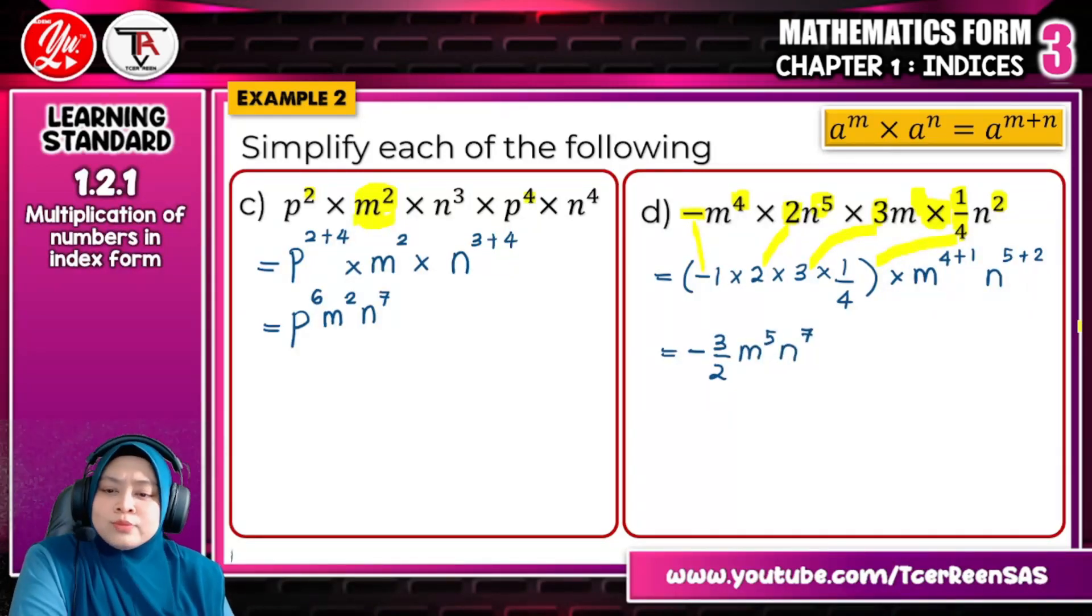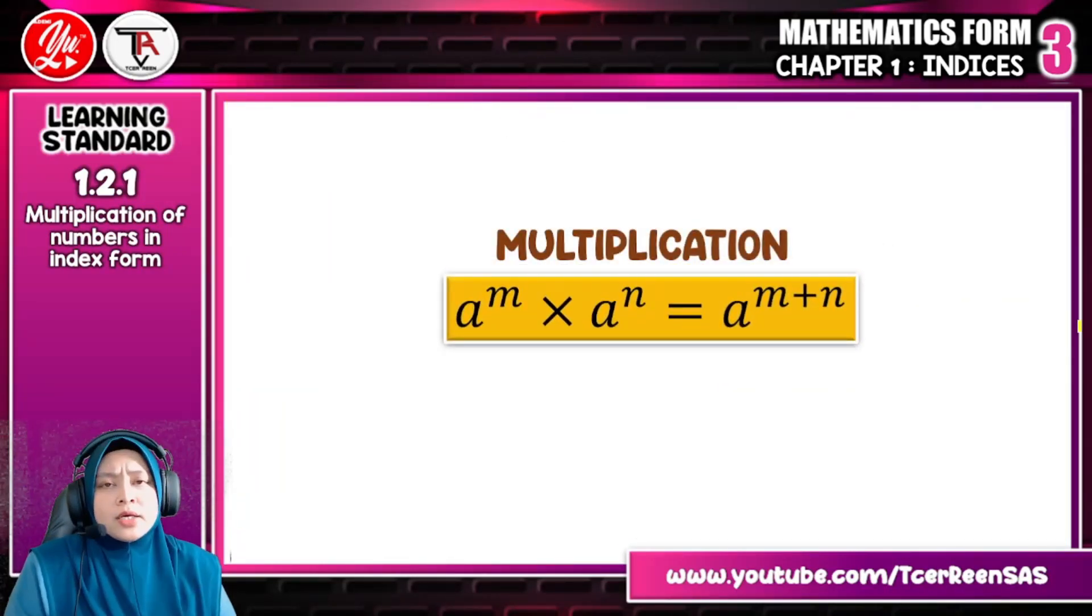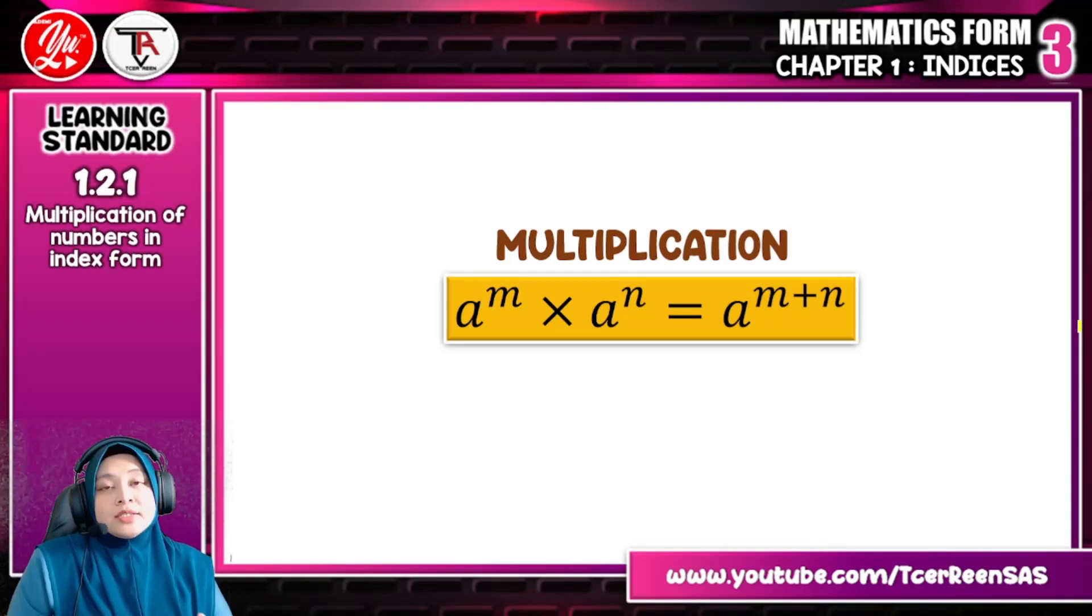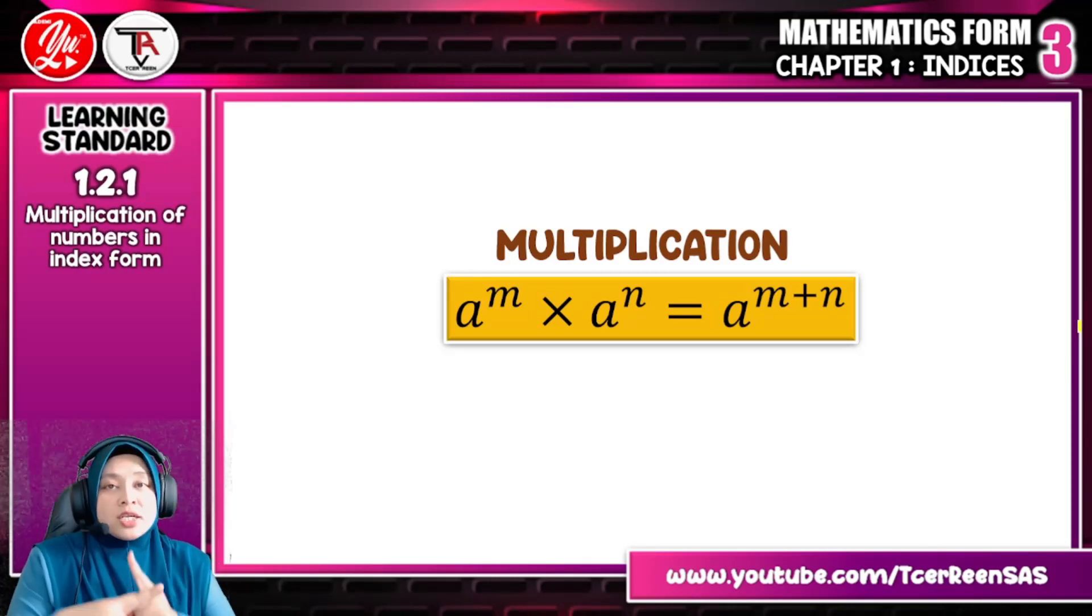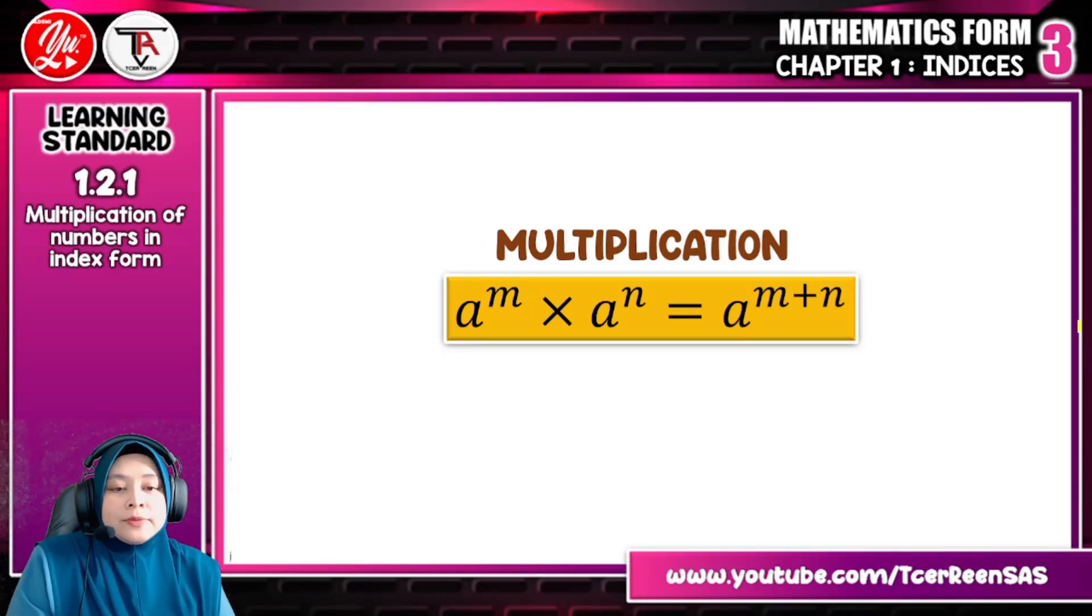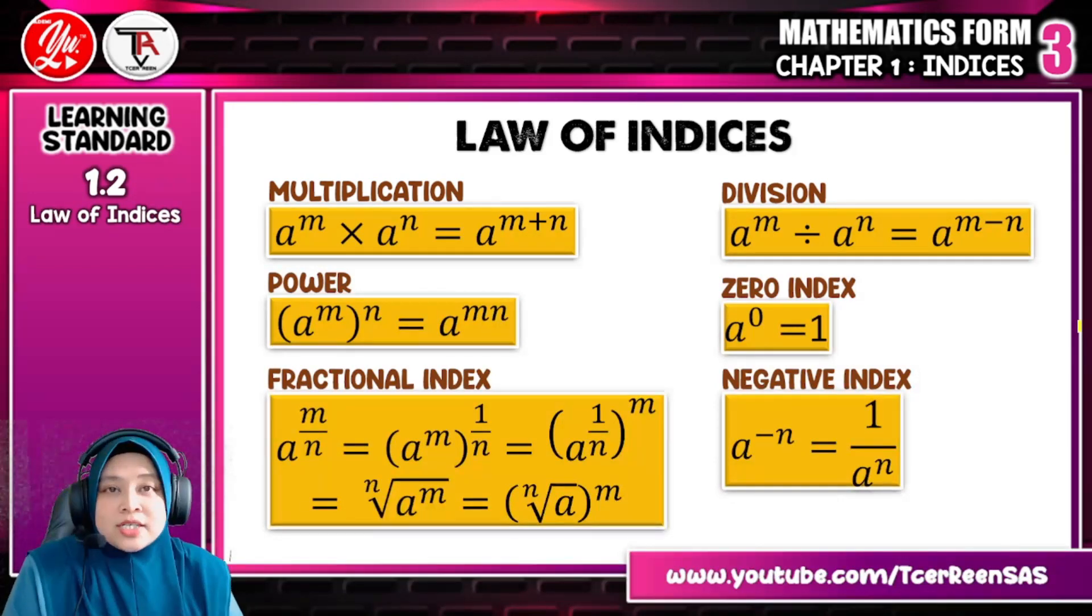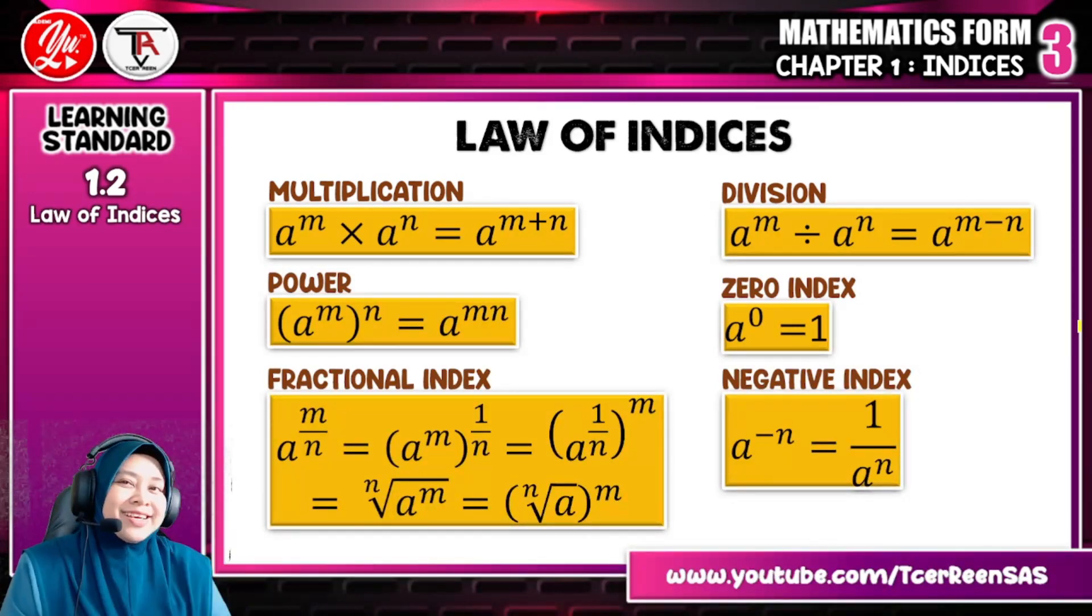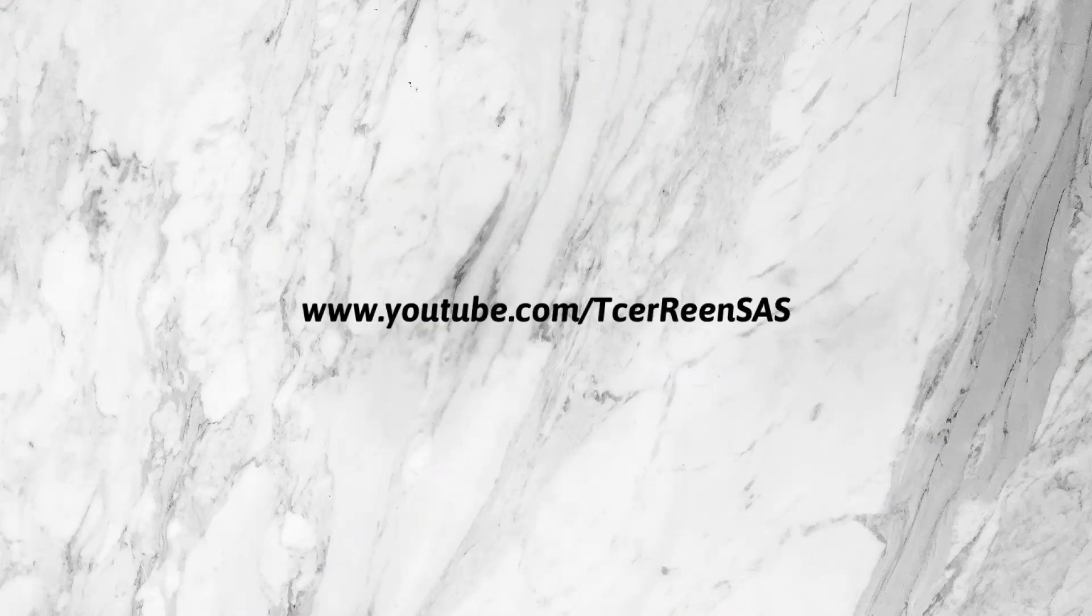I think that's all for today's topic which is multiplication of numbers in index form. I hope you can really understand it. What you need to remember is if the operation is multiplied with same base, the indices must be added together. Add means tambah. Kalau darab, tambah. So I think that's all for multiplication. We will continue after this with division. Till we meet again. Assalamualaikum. Bye-bye.